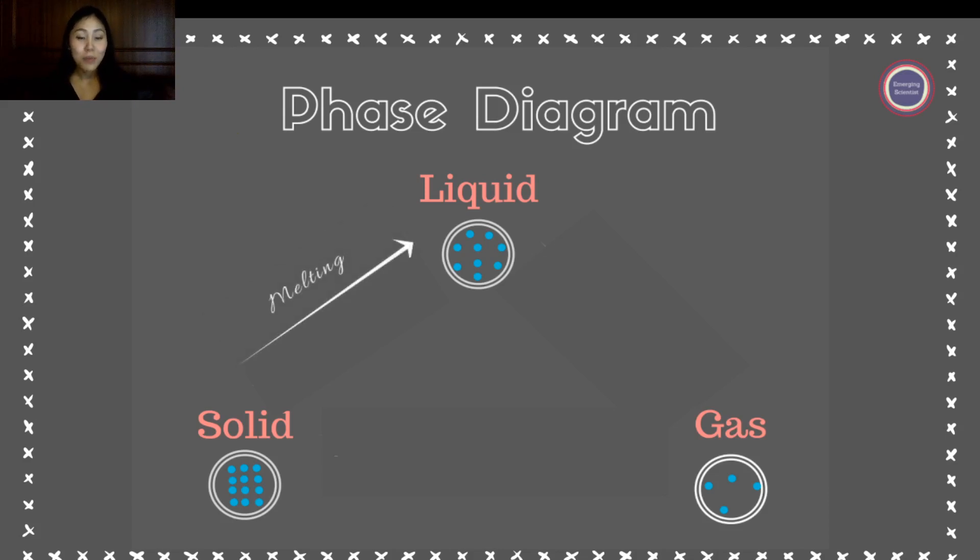So for example, when you have a solid ice cube, that's a solid. When you're melting it, it goes from a solid form to a liquid form.